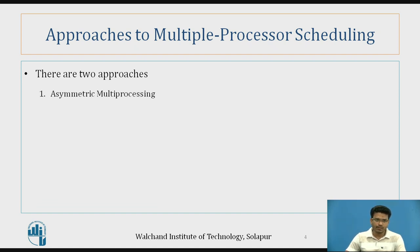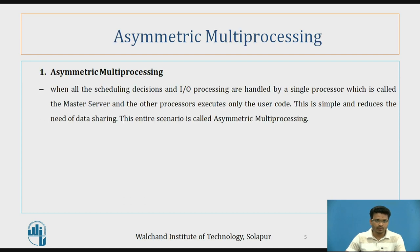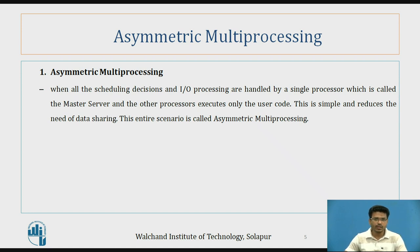There are two approaches for multiple processor scheduling. The first is asymmetric multiprocessing and the second is symmetric multiprocessing. In asymmetric multiprocessing, we have two types of systems: a master system and a slave system. The master system decides everything like scheduling and I/O processing, while other processes just execute the user code. This is simple and reduces the need for data sharing.